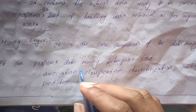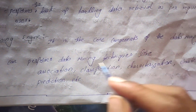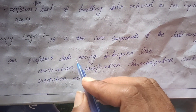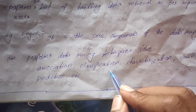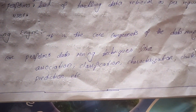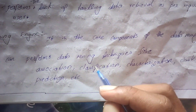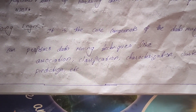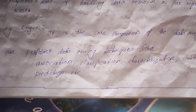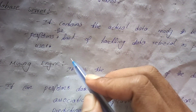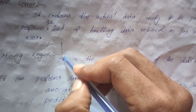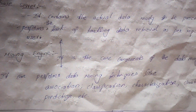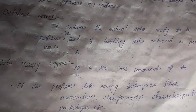The data mining engines are the core component and perform the data mining techniques. They contain various modules and algorithms such as classification, clustering, and prediction. The engines take data from the database servers and perform these modules and algorithms.